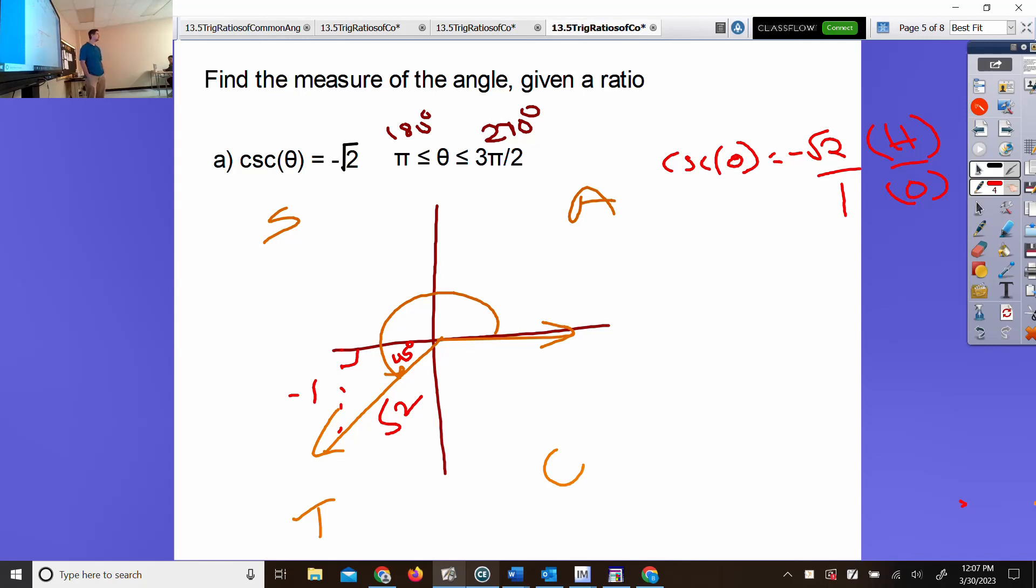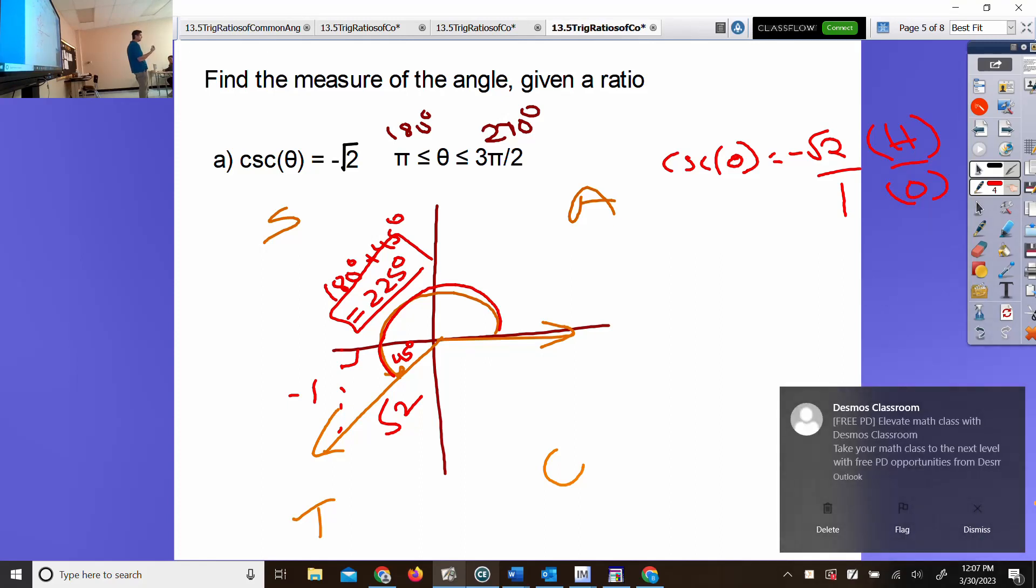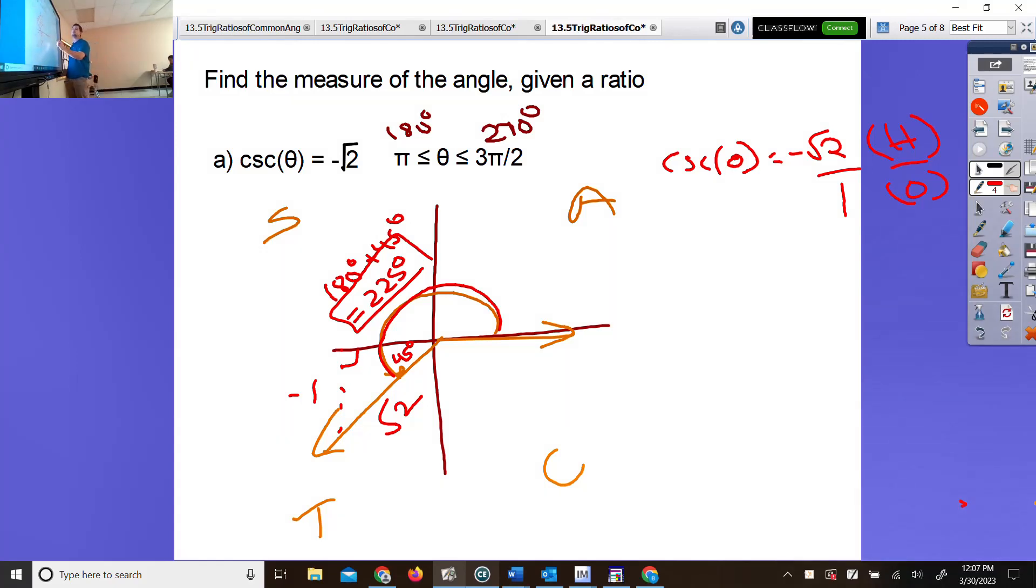Is that enough information to figure out the reference angle? What special triangle has a 1 and a root 2? 45-45-90. What's the actual measure? 225. If you rotate 180 degrees and then 45, it's 180 plus 45, which is 225 degrees of solid rotation. The original problem had between π and 3π/2, so you need to convert 225 by multiplying by π over 180. Answer is 5π/4.